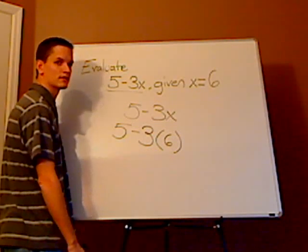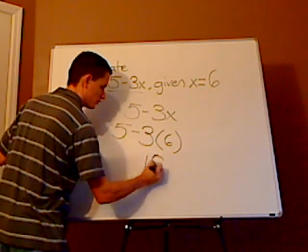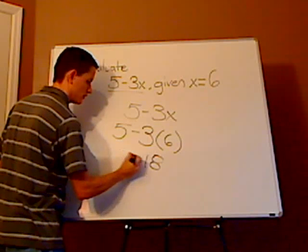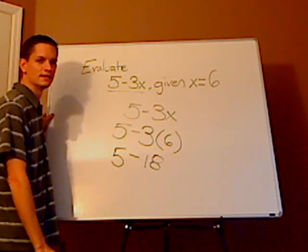What's 3 times 6? Yeah, it's 18. Bring everything else down as you see it. So it's 5 minus 18.